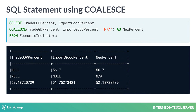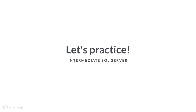Finally, in the third row, both Trade GDP% and Import Good% are not null. So, the first non-null value — the value from the Trade GDP% column — is assigned to the column New% for the third row. Time to put this into practice.